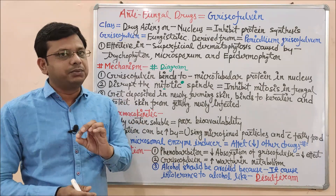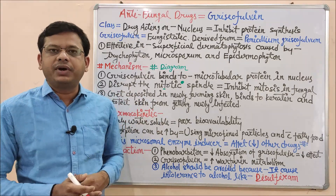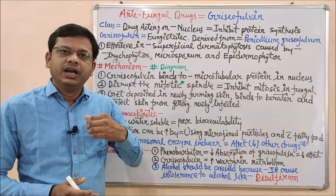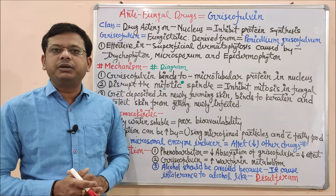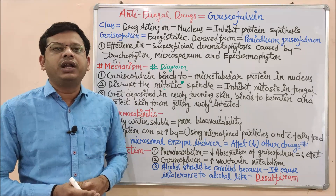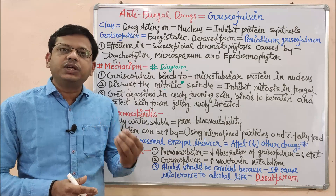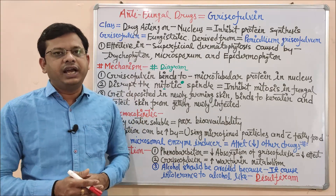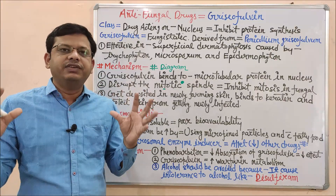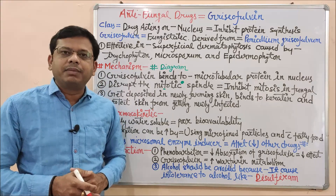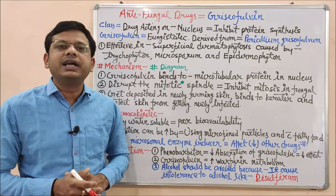You have seen in the classification that some drugs work on the fungal cell membrane, some drugs work on the fungal cell wall, and some drugs work by affecting basic enzymes responsible for cell wall and cell membrane synthesis. Today's drug affects the nucleus of the fungal cell, inhibiting the basic cell division process, thereby inhibiting fungal growth. Since it affects mitosis, it does not destroy the cell completely but stops cell growth and division — it inhibits it. Therefore, this drug is not fungicidal but fungistatic.